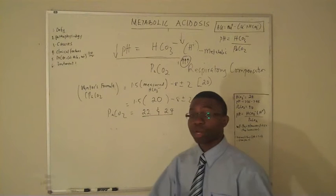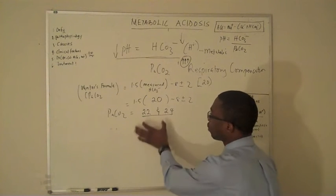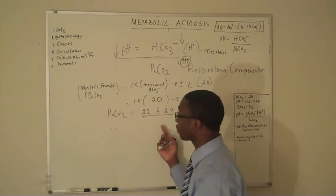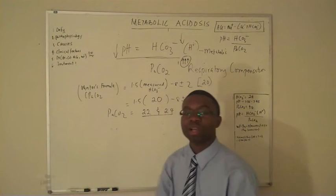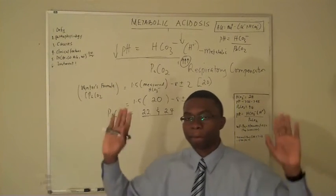Keep that in mind, but then when we calculated this number, what we expect should fall in between 22 and 24. If the number we get was 22 and 24 after we measure this patient's bicarb later, that means it's purely metabolic acidosis. Perfect.